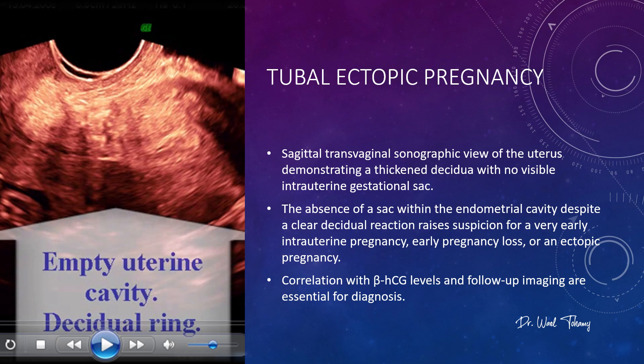Look closely at this transvaginal scan of the uterus. You can see a thickened decidual reaction but no gestational sac inside the uterus. When you have this absence despite a clear decidual reaction, think of three possibilities: very early intrauterine pregnancy, an early pregnancy loss, or an ectopic pregnancy. Always check the beta-HCG levels and plan follow-up imaging before making the final call.